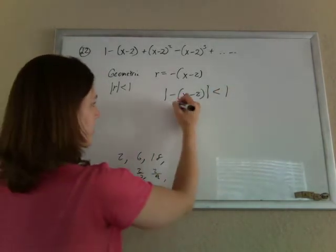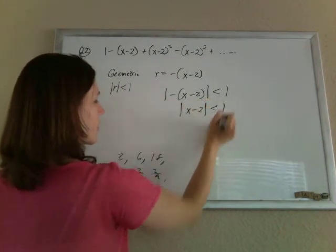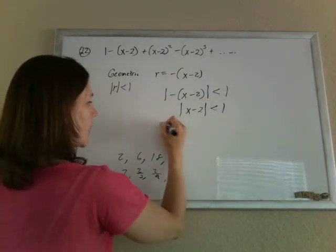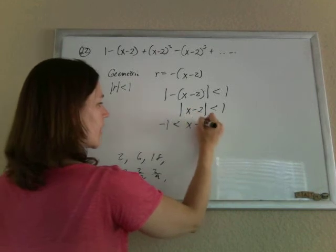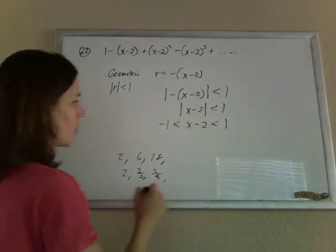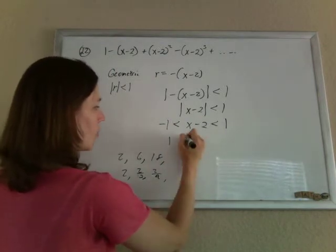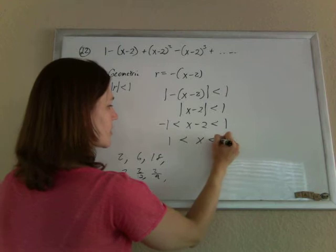Well, we can just dump that negative because it's in the absolute value like that. And we can rewrite this absolute value as the x minus 2 being sandwiched between the negative 1 and the 1. Just add a 2 to both sides, and we get 1 is less than x is less than 3.